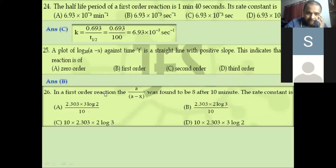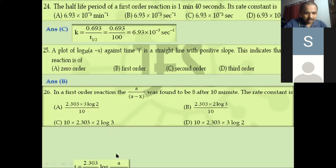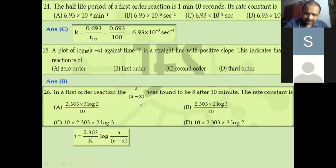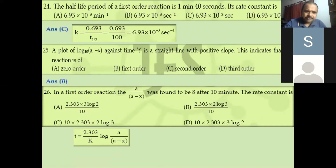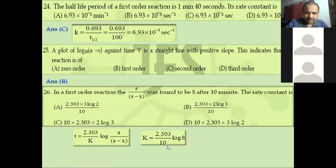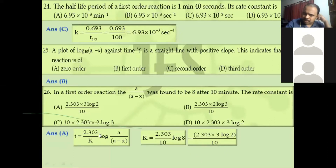Question 26: In a first-order reaction, a/(a−x) was found to be 8 after 10 minutes. Using T = (2.303/K) × log(a/(a−x)), the entire ratio is given as 8. So we take log 8, which is log(2³) = 3 log 2. Log 2 is 0.3010, so we simplify using those first five standard values. The answer comes directly from this calculation.